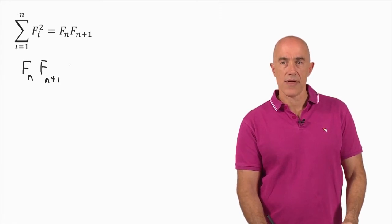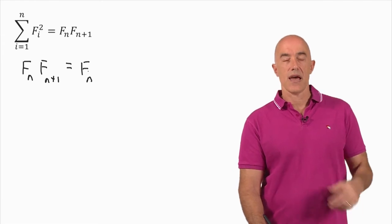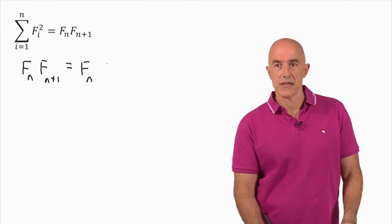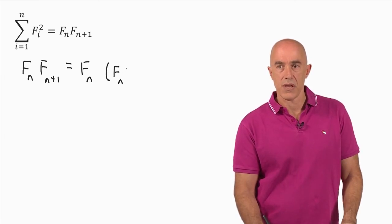And you can see how that will be easier by this first step. We have this is equal to F sub n and the only thing we know is the recursion relation. So we can replace F sub n plus 1 by F sub n plus F sub n minus 1.